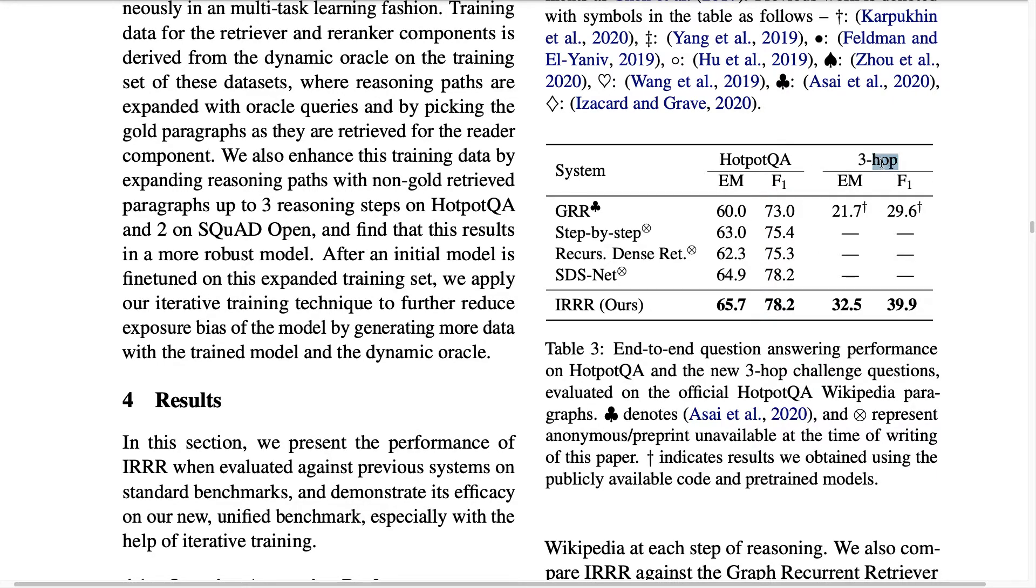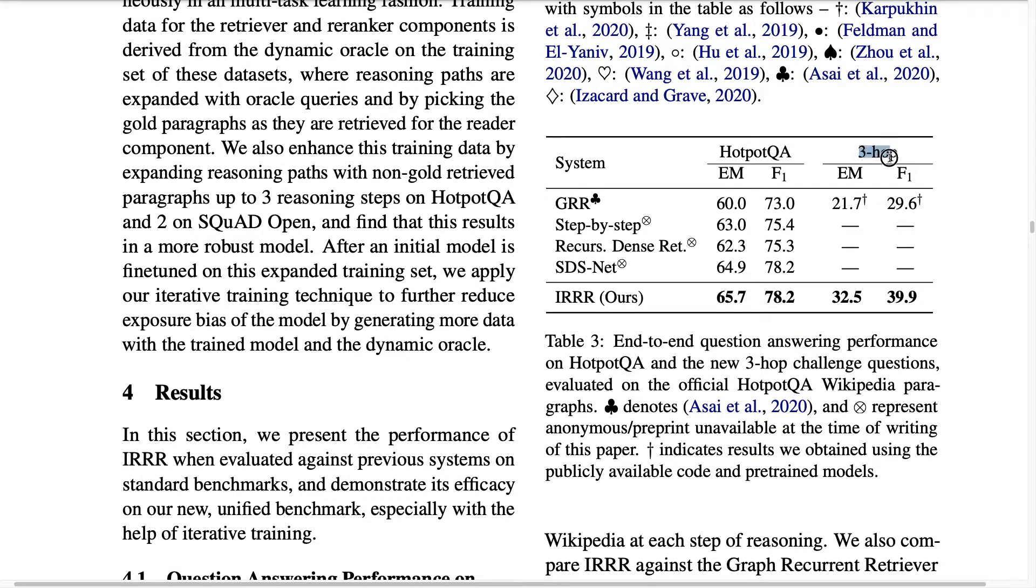And then finally, the authors also propose a new benchmark which is specifically targeting three hop question answering so you need to extract not just one or two but three paragraphs and then combine supporting evidence to answer. The authors propose this new benchmark with 200 questions and on that benchmark it seems that also the IRRR model is performing better than the GRR model which is another multi-hop question answering model. However it's interesting to note that the F1 score is much lower than HotpotQA so this task seems to be very difficult in general.